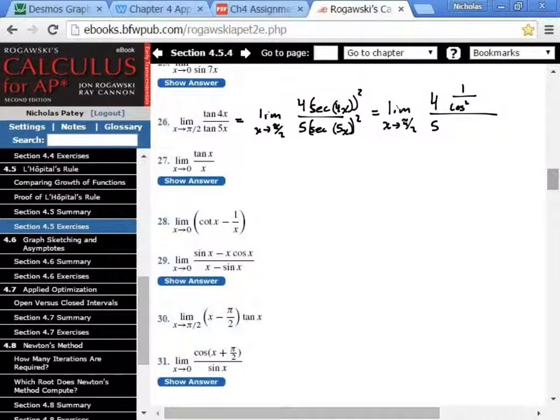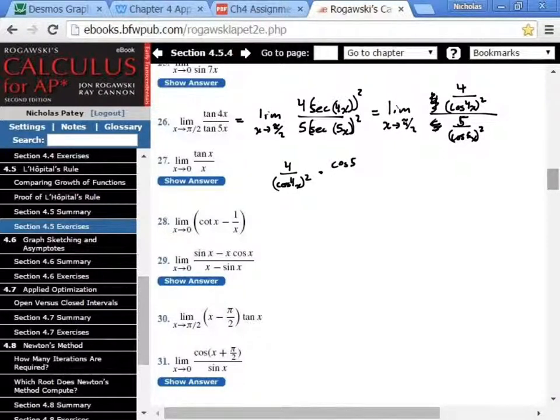So, we have the limit as x approaches pi over 2, and then we're going to replace secant with 1 over cosine. We've got 4x, and this is being squared because secant is being squared. The other one is 1 over cosine 5x squared. Now this looks kind of weird. We have fractions inside of fractions. So, let's take the top fraction and multiply it by the reciprocal of the bottom.